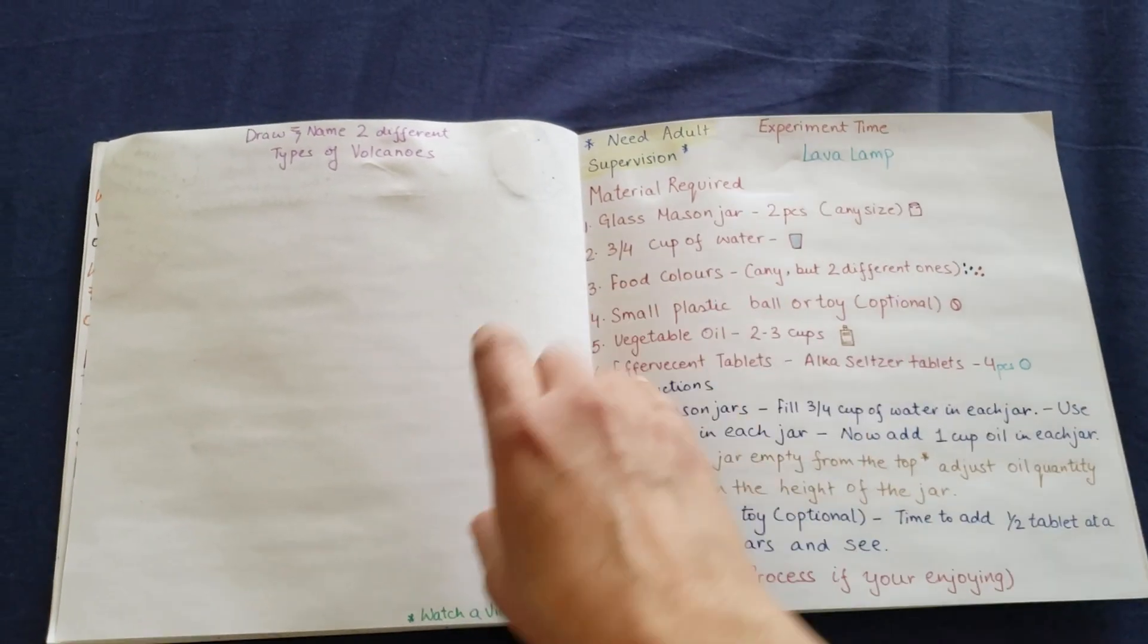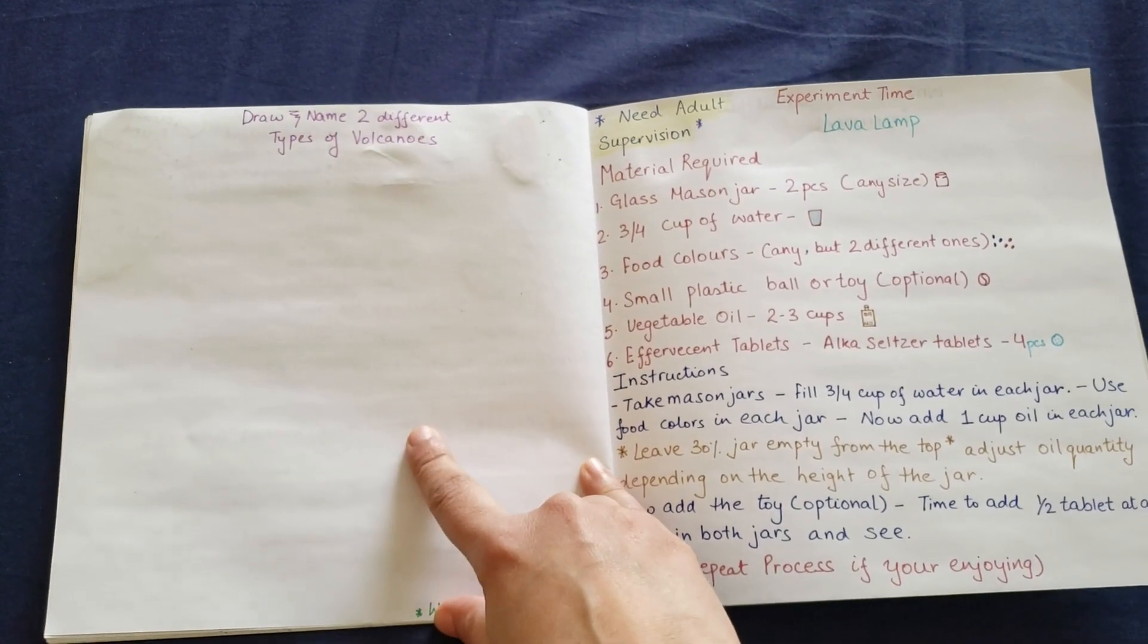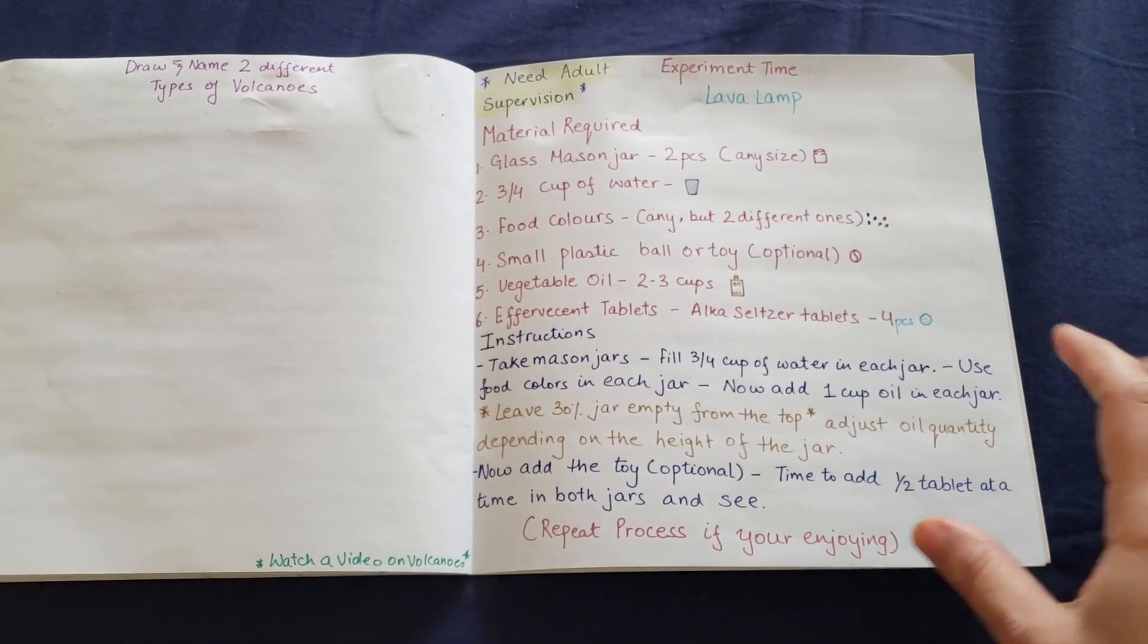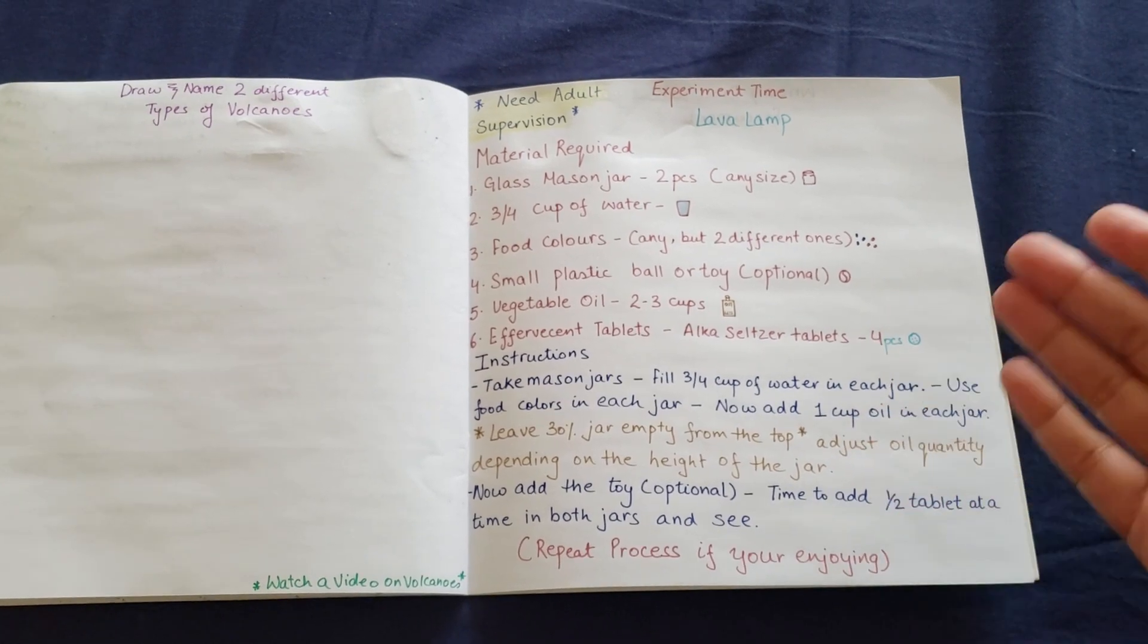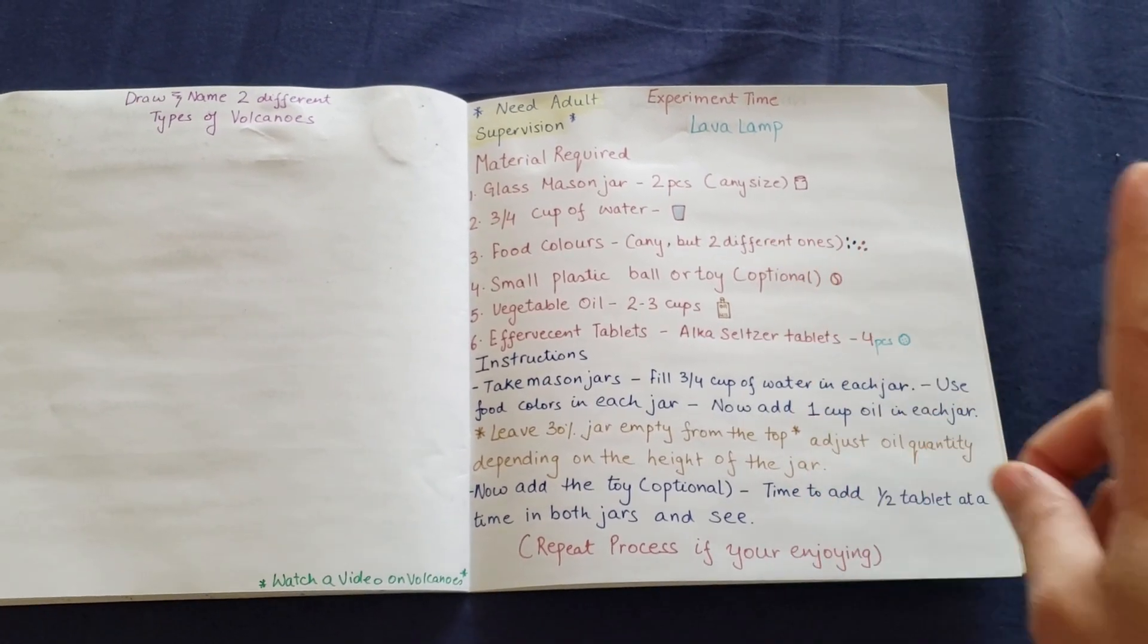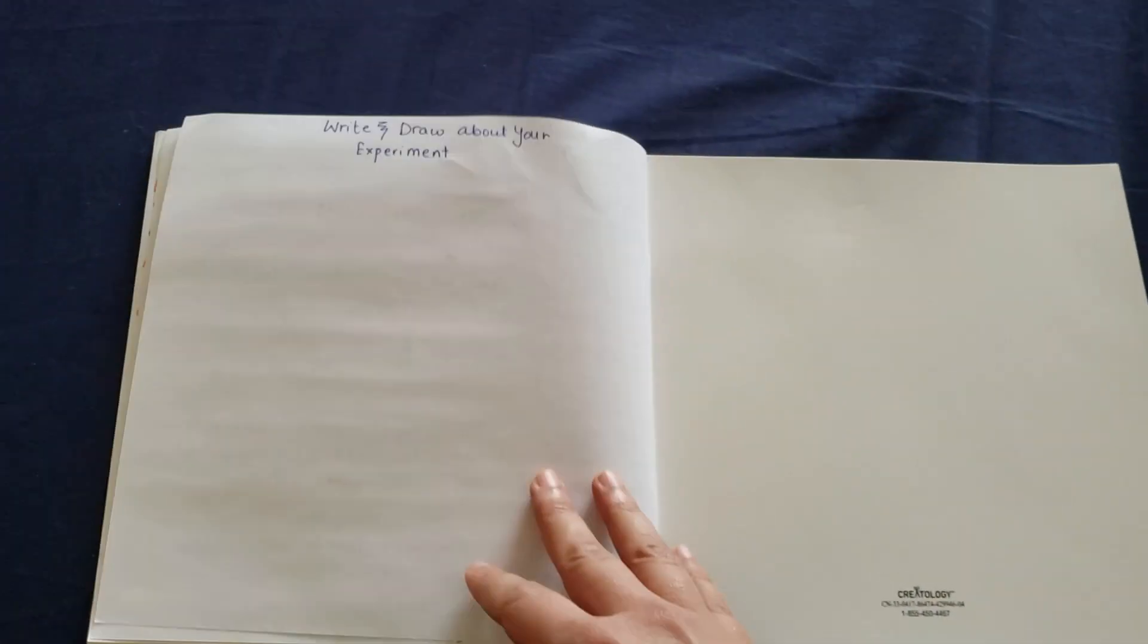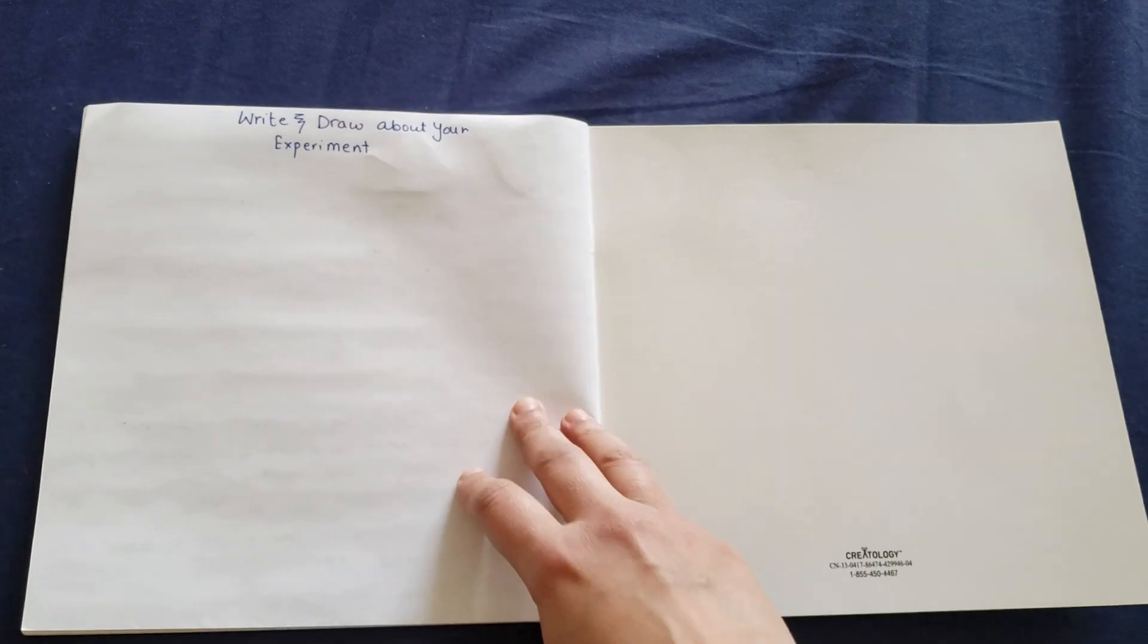So here we are going to make lava lamp. You have to draw two different types of volcanoes and name them. And then here you have an experiment where I have given you the material that is required, the instructions, how you need to do, and this needs adult supervision. So I think that's a great way of doing something. And here you are going to write and draw about your experiment. So you will have your thesis right here. Whatever you figured out, whatever you saw, you have to just write it down.